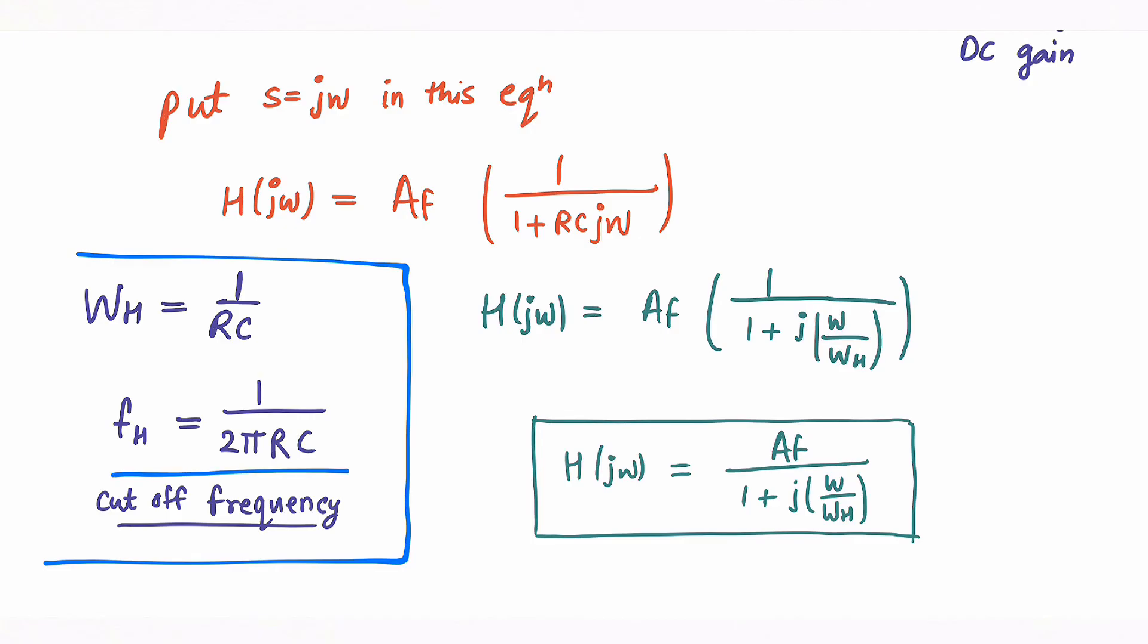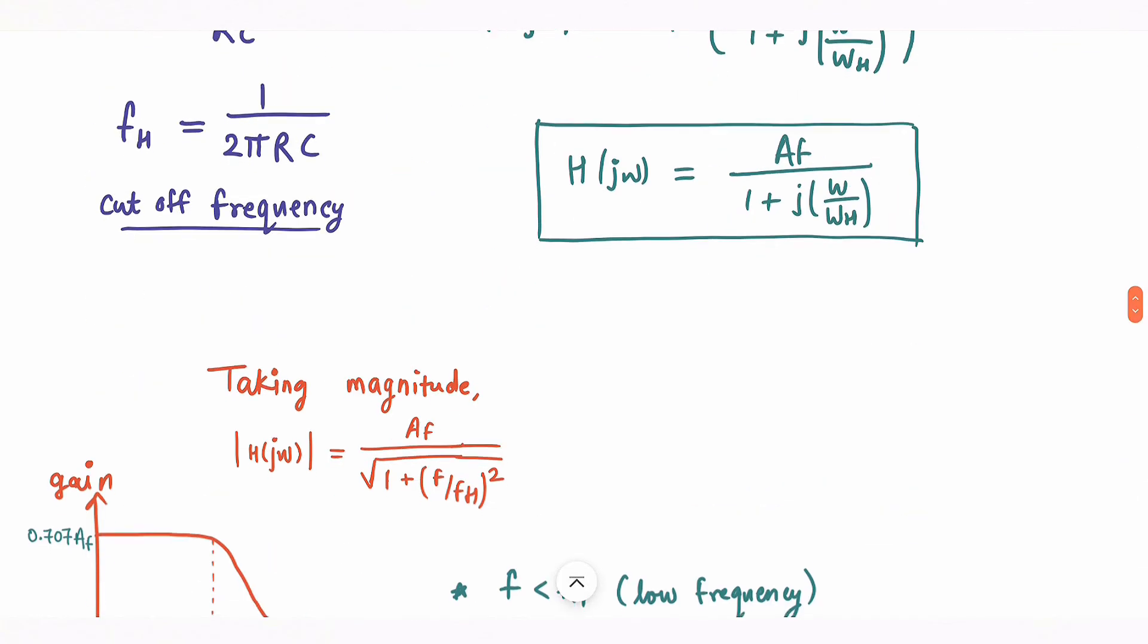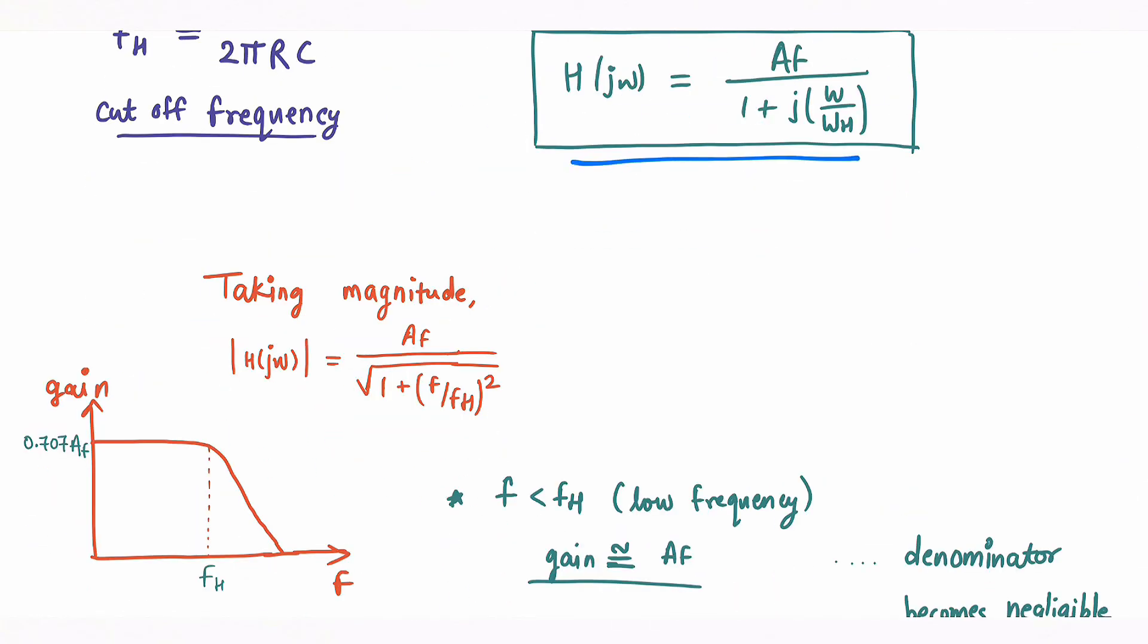Now I am just taking magnitude of this equation. So the denominator will be inside under root and each term will be squared, so the square of 1 is 1 and I have just replaced ω by f and we have f upon fH bracket square.